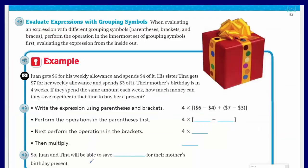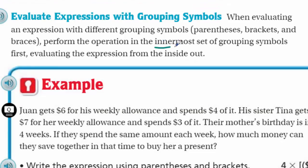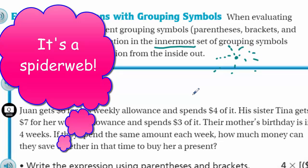Now we move on: evaluating expressions with grouping symbols. When evaluating an expression with different grouping symbols - parentheses, brackets, and braces - perform the operation in the innermost set of grouping symbols first, evaluating the expression from the inside out. The innermost means we start from the inside and work our way outside.